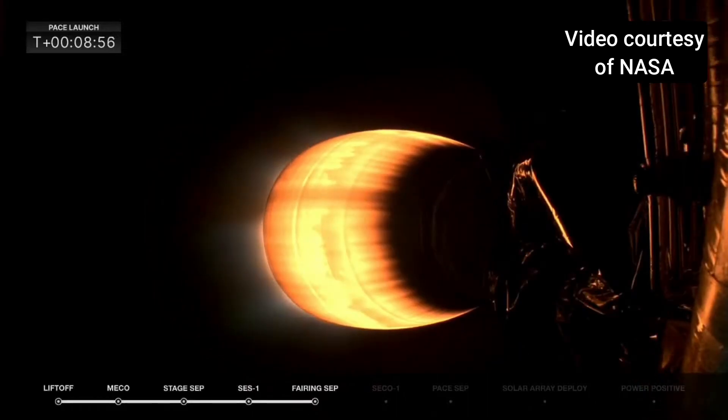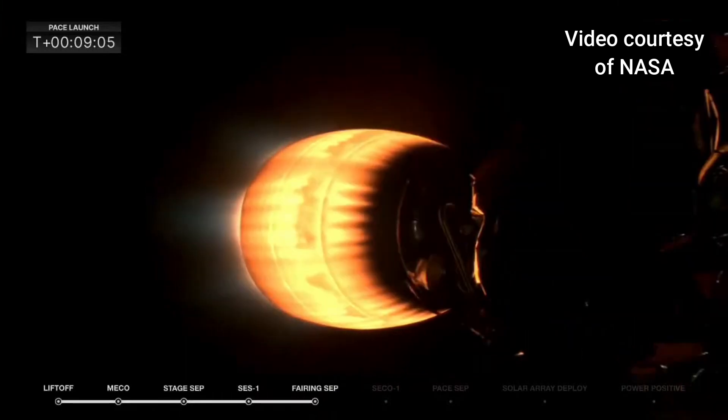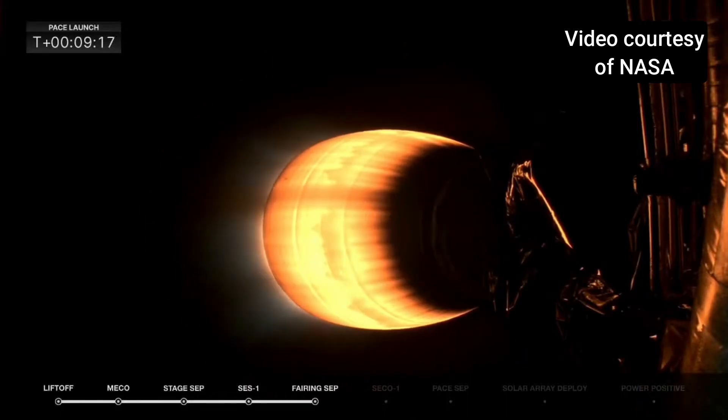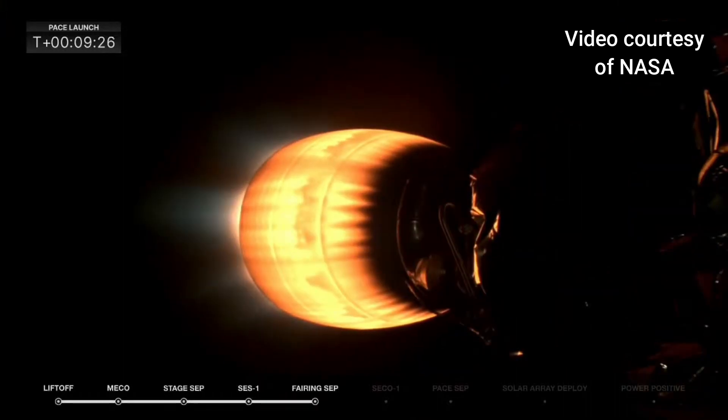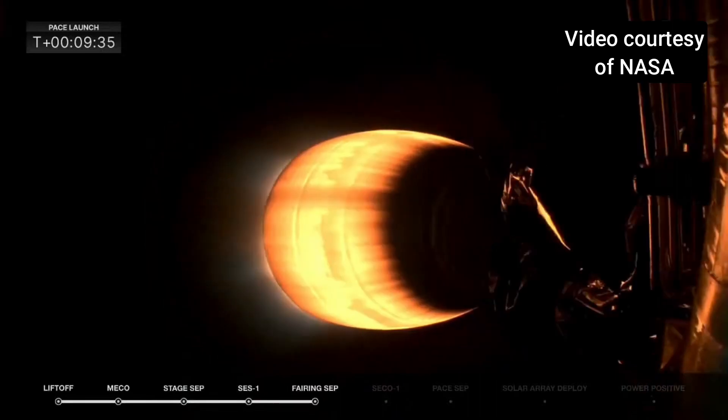T plus nine minutes on the count. Just about a minute left on the stage two burn. There will only be one stage two burn. As Jimmy explained, this is a direct inject sun synchronous orbit. So just a single burn for the stage two this morning. Things continue to look well. Chamber pressure on MVAC and trajectory look nominal. Then we'll coast for just a few minutes and separate the PACE observatory.